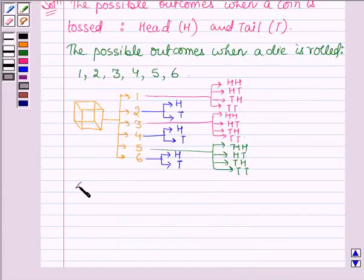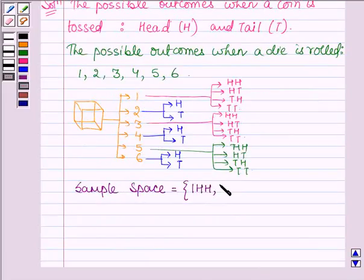Now let's write down the sample space for the given experiment. The first sample point is 1HH. Then we have 1HT, 1TH, and 1TT. With 2, we have 2H and 2T.